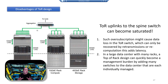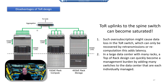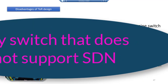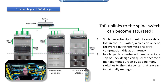A couple of disadvantages of the TOR design: the traffic needs to be east-west. If you get too much north-south traffic, you can saturate those uplinks, meaning traffic will be dropped and require retransmission and recomputation, which adds latency. Another problem is that top-of-rack switches from brands like Cisco, HP, or Lenovo that are not software-defined networking switches become more complex to manage.